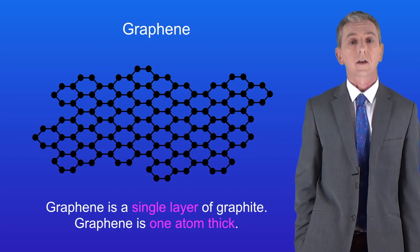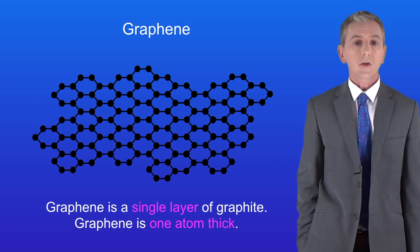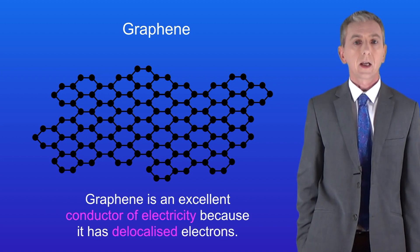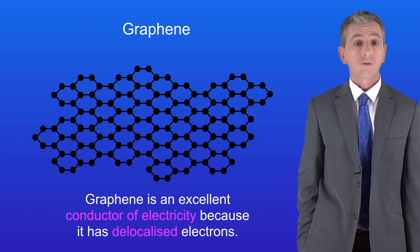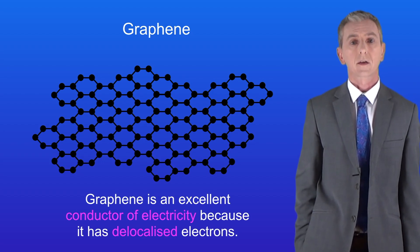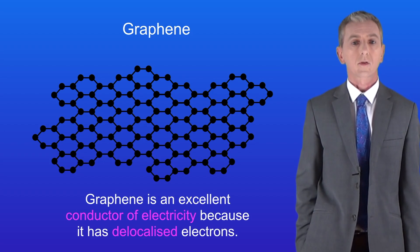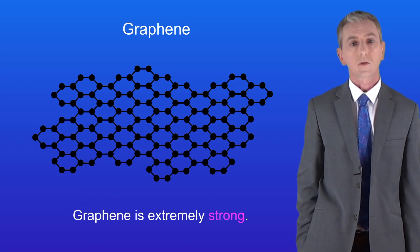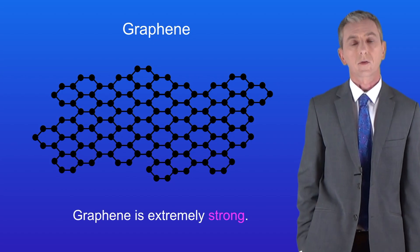Graphene was only isolated in 2004. Graphene is an excellent conductor of electricity because it has delocalised electrons, just like graphite. In the future, graphene will be useful in electronics. Secondly, graphene is extremely strong, and that will make it useful for new materials.